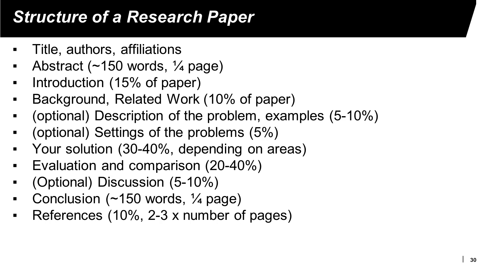For a research paper, the reference section is usually 2 to 3 times the number of pages. For a paper of 8 pages, the number of references is approximately 16 to 24. It is important to follow the same structure of typical research papers.